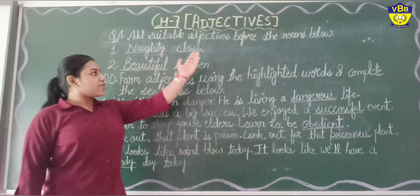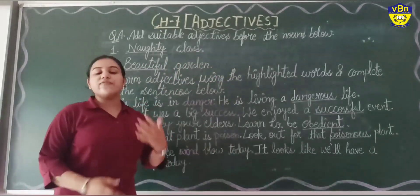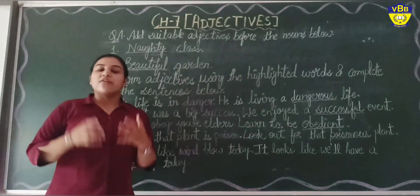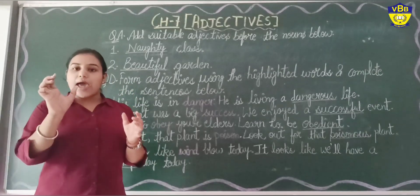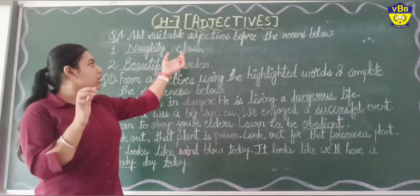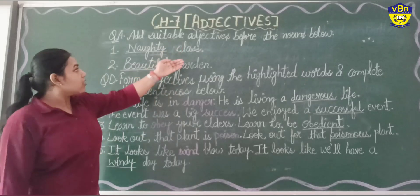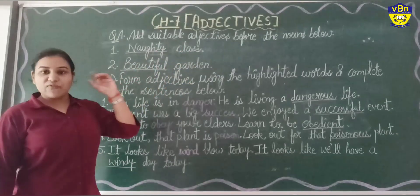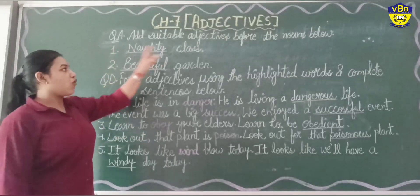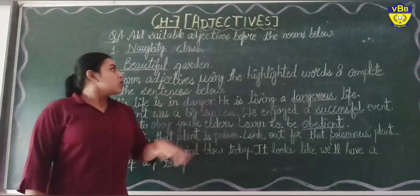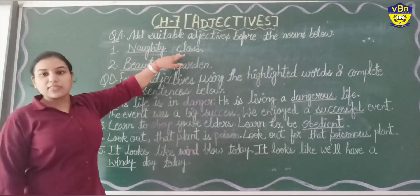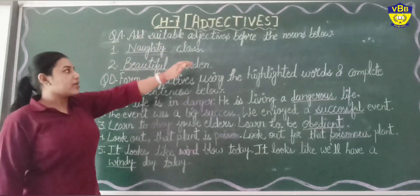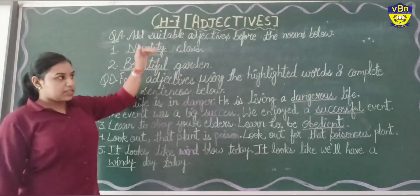Add suitable adjectives before the nouns below. What we have to do in this question is simply add an adjective before the noun. Here are some nouns given. For example, 'class' and 'garden.' We have to put a suitable adjective before the noun — 'naughty class,' where naughty is the adjective and class is the noun.